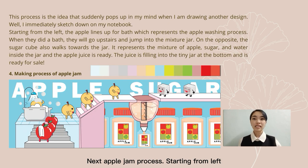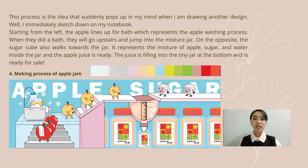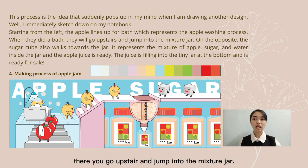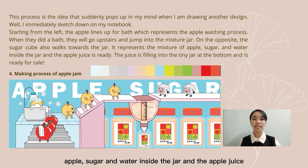Next, apple jam process. Starting from the left, the apples line up for a bath, which represents the apple washing process. When they finish bathing, they go upstairs and jump into the mixture jar. On the opposite side, the sugar also walks toward the jar. It represents the mixture of apple, sugar, and butter inside the jar, and the apple jam is ready.